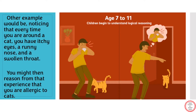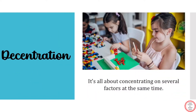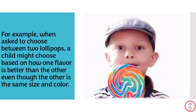Another example of conservation could be noticing that every time you are around a cat, you have itchy eyes, a runny nose, and a swollen throat — and understanding that you might be allergic to cats. Moving on to the next characteristic: decentration. It is about concentrating on multiple factors of an object at the same time. For example, while writing, noticing the color of the pencil, its grip, and its texture. Another example: while choosing between two lollipops, a child might choose their favorite flavor even though the other is the same size and color.